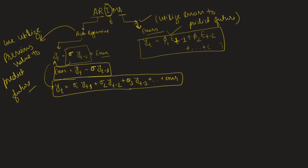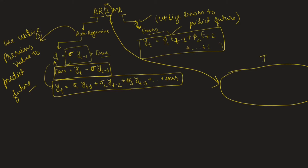Now we have the third term: Integration, I. Integration is the opposite of differentiation. It is telling how much differentiation you are applying on top of your series. I can be either 1, 2, or 3. Let me explain how integration looks in terms of data.